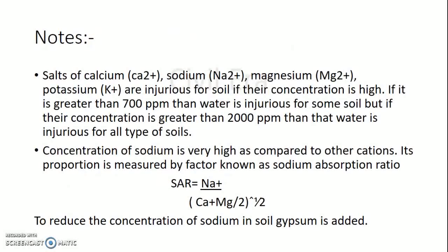Some important notes: salts of calcium, sodium, magnesium, and potassium are injurious to soil if the concentration is high. If it is greater than 700 ppm, the water is injurious for some soils; if greater than 2,000 ppm, the water is injurious for all types of soil. The concentration of sodium is very high compared to other cations, and its proportion is measured by a factor known as the Sodium Absorption Ratio (SAR). SAR = Na / √((Ca + Mg) / 2). To reduce the concentration of sodium in soil, gypsum is applied.